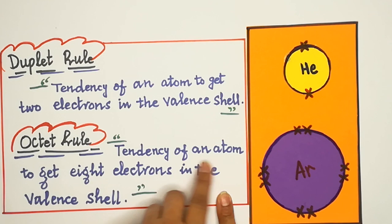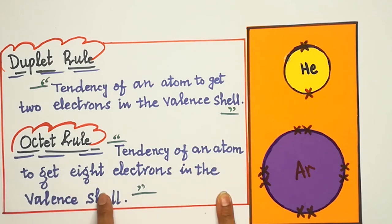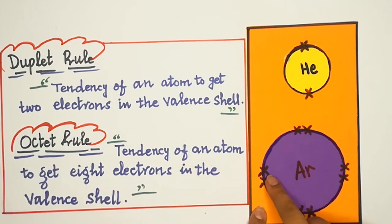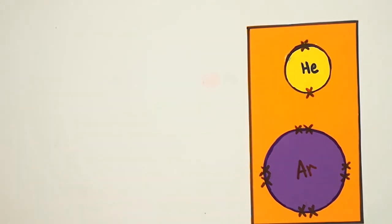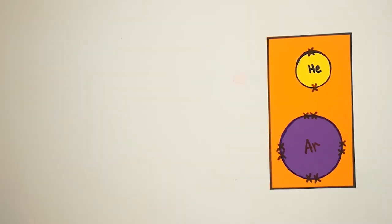Octet rule: tendency of an atom to get eight electrons in the valence shell. Kisi bhi atom ki tendency jo apne outermost shell mein eight electrons hasil karna chahta hai — use kehenge octet rule. Ab hum kuch examples dekhte hain ki kaunse elements duplet aur octet rule ko follow kar rahe hain.